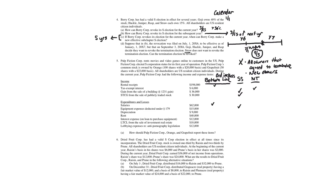Equipment expenses under Section 179 are separately stated because the limitation is determined based on each individual taxpayer. Depreciation is always bottom-line ordinary income for an S-corporation — unlike partnerships, where it could be separately stated when a C-corporation owns the partnership. Since a C-corporation can never own an S-corporation (per the four requirements), depreciation is always bottom line. Rent expense is similarly always bottom-line ordinary income.